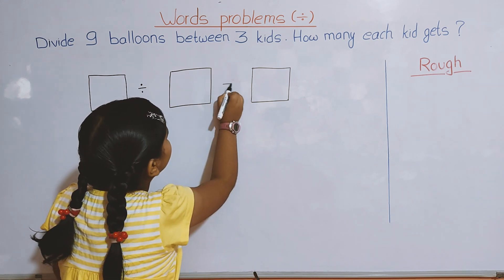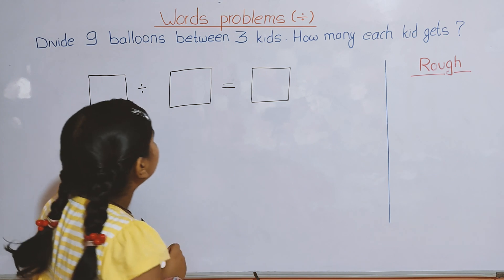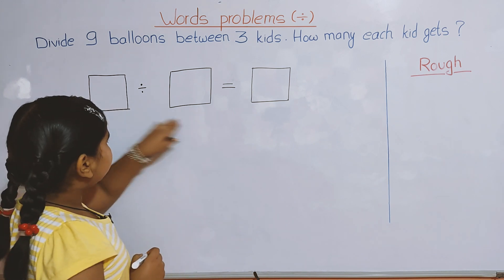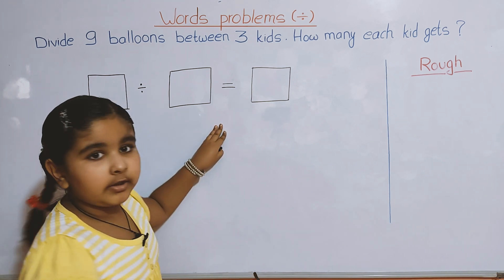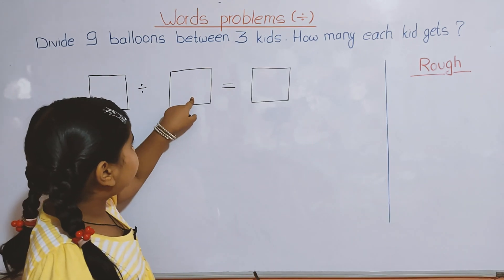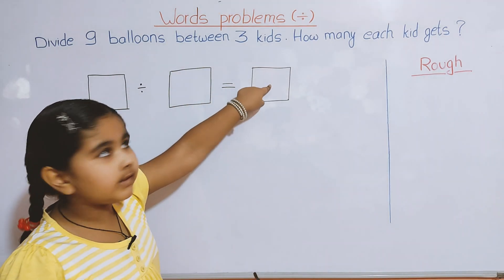And here will be the equals sign. Now, what do we do with these 3 boxes? We write the question in these 2 boxes and the answer here. First, we have to find the numbers from the problem.